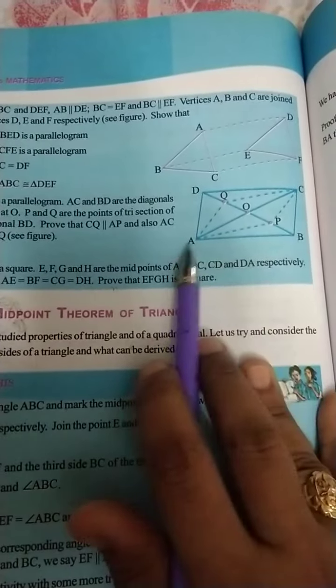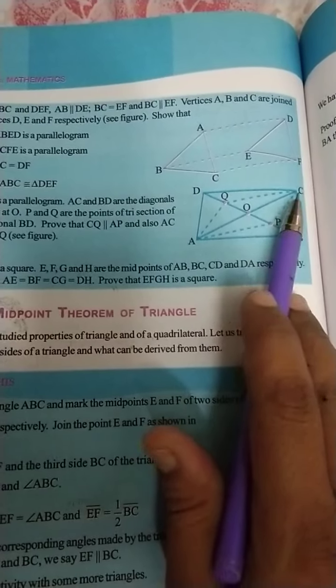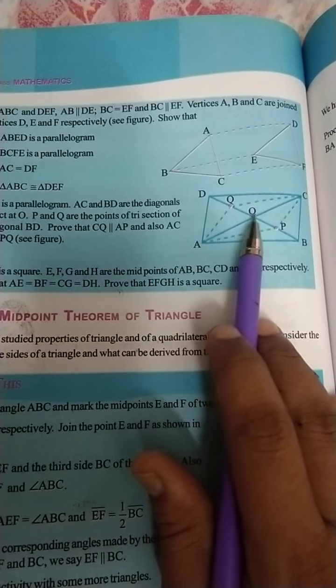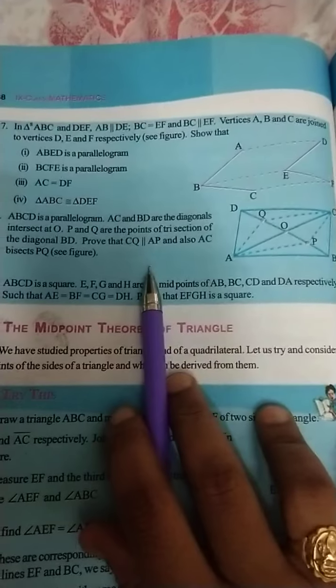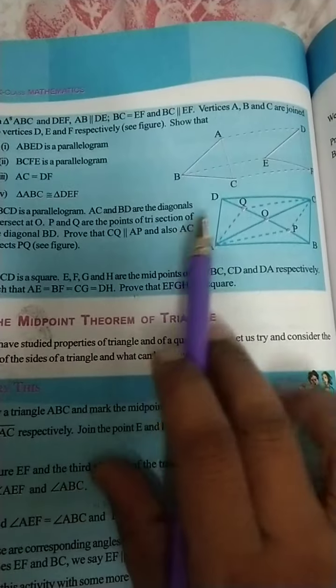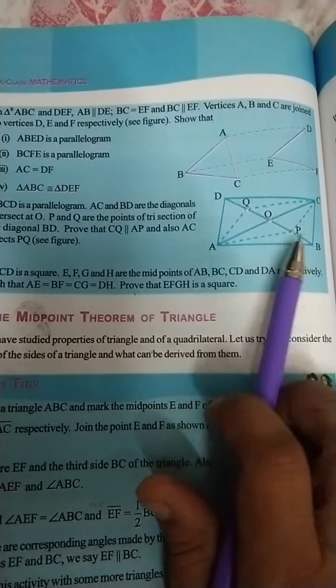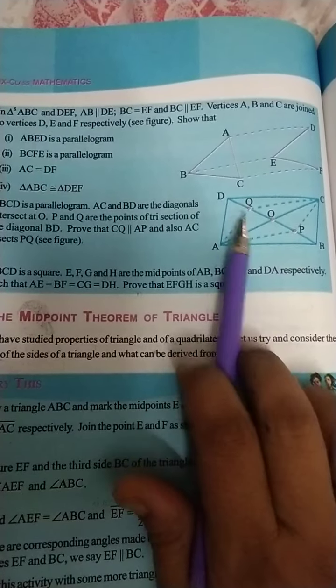This is ABCD, a parallelogram, and AP, CQ. O is the intersection point. Now, we should prove that CQ is parallel to AP and also AC bisects PQ.